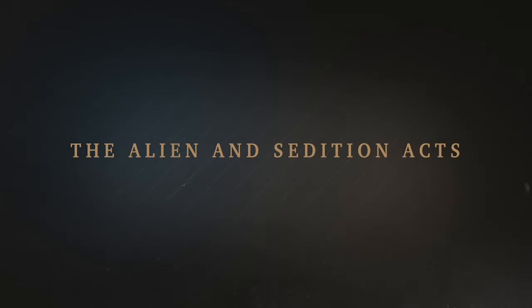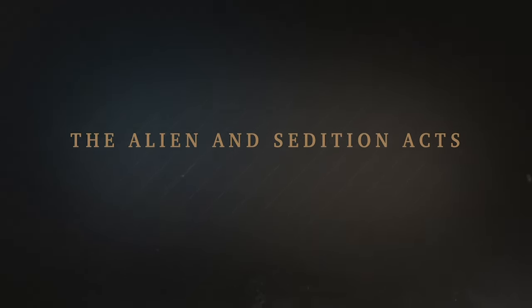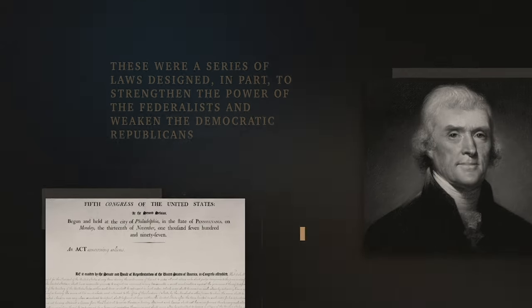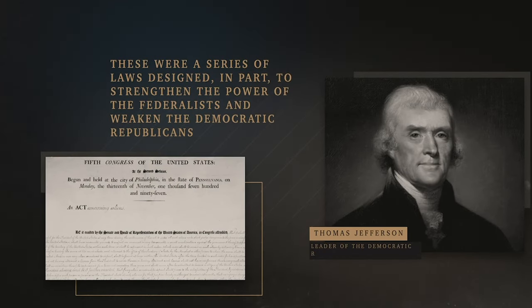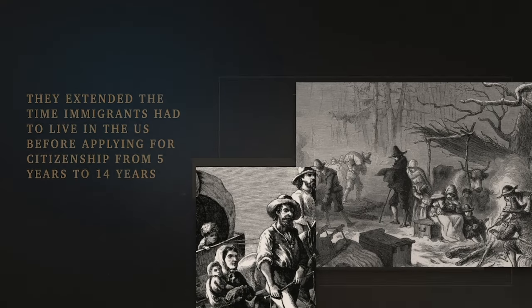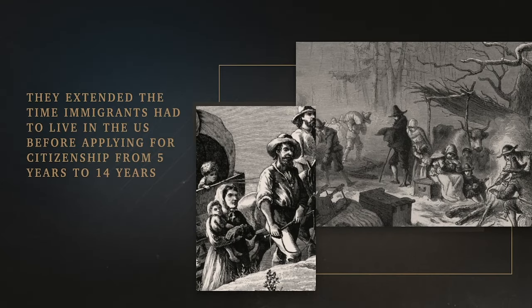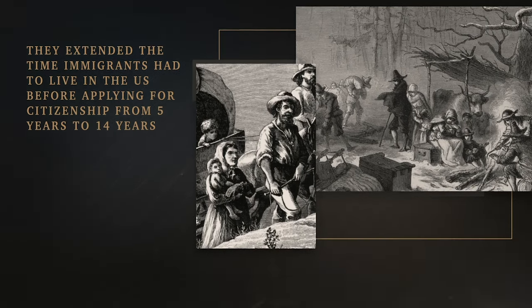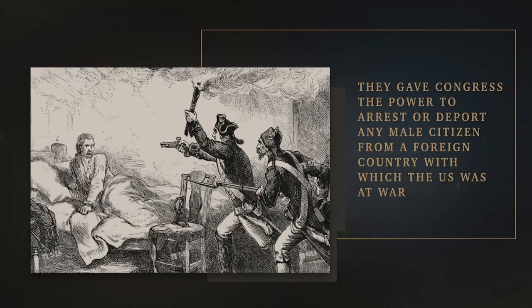As a response to this fear, the Federalists in Congress passed the Alien and Sedition Acts — a series of laws designed to strengthen the power of the Federalists and weaken the Democratic-Republicans. The Alien Acts did three things. First, they extended the time immigrants had to live in the U.S. before applying for citizenship from five years to 14 years. Second, they gave Congress the power to arrest or deport any male citizen from a foreign country with which the U.S. was at war.